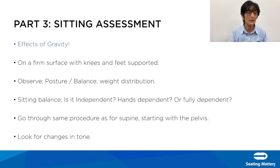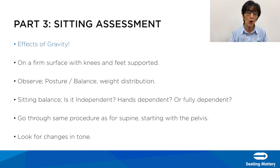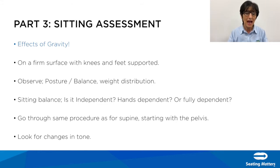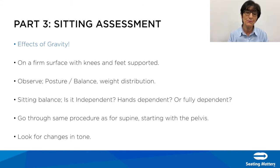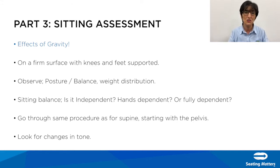Part three is getting the person up into a seated position — preferably on the edge of a plinth or bed, but I'll demonstrate how this can be done in a chair as well. Observe their posture, balance, and weight distribution. When the person is sitting on the edge of the bed or plinth, gravity is eliminated and we get to see the real posture. Is it independent, do they need hands to hold on, or are they fully dependent? Go through the same procedure as in the supine, starting with the pelvis, and look for changes in tone.